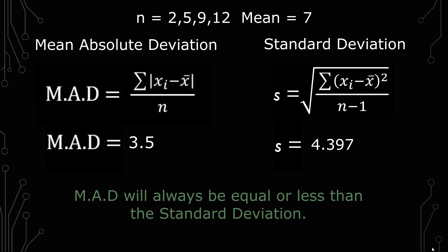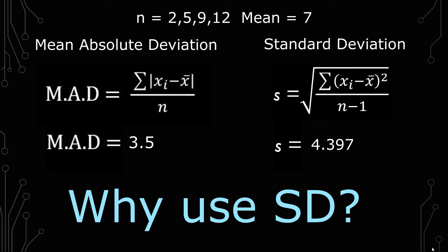So if the mean absolute deviation is more straightforward and intuitive, then why do we use the standard deviation? And why do you probably know the standard deviation more in terms of familiarity than the mean absolute deviation? And the answer for that is because the standard deviation is directly associated with the normal distribution and the mean absolute deviation is not.